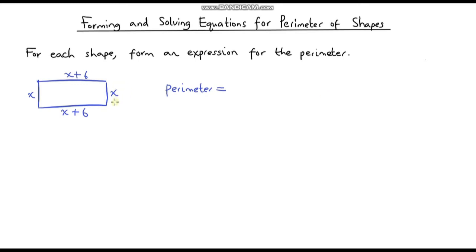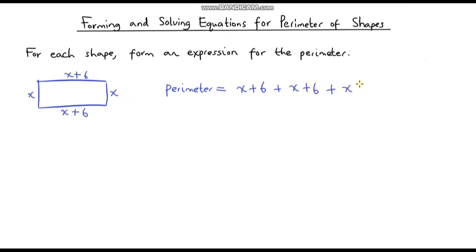In the last video, we looked at forming an expression for the perimeter of different 2D shapes. Just as a recap, the perimeter is the total distance around the outside of a shape. So if we form an expression for the perimeter of this shape, we're going to add up all of the different side lengths. So we've got x plus 6, x plus 6, plus another x plus 6, plus x, and plus this x here. This is an expression for the perimeter of this shape.